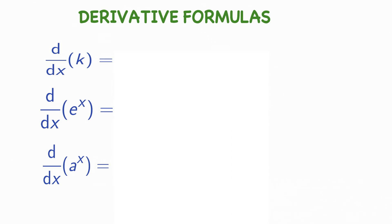Now we revise these three formulas quickly. What is derivative of constant? Forgotten? No. Derivative of constant is 0. What is derivative of e power x? The only function whose derivative is itself is e power x. Derivative of e power x is e power x only.